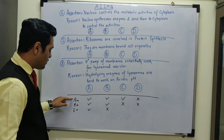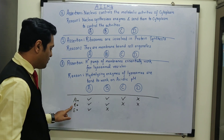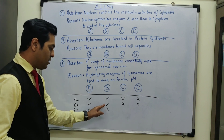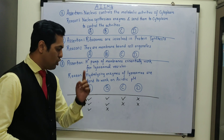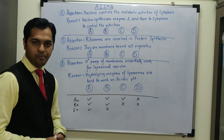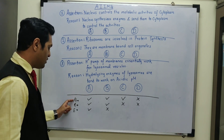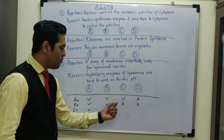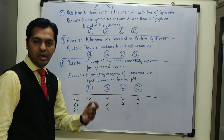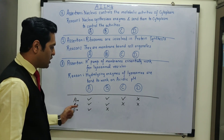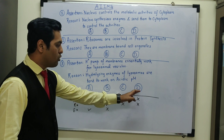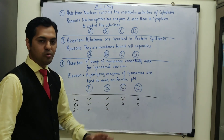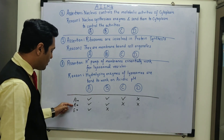Whenever the assertion statement is correct but the reason statement is wrong, then you will mark option C. Whenever both the assertion and reason statements are incorrect, you will mark option D. So in assertion and reason questions you have to mark a particular response depending on these three criteria.